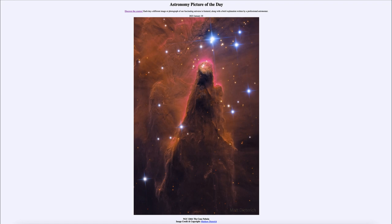When stars begin to form, they will begin to form first in the darkest, densest knots — very dark areas such as close to the tip of the cone here, where we see some very dark areas just below that tip, which are the denser areas that we really cannot see through in visible light.